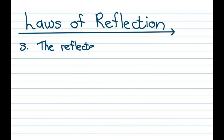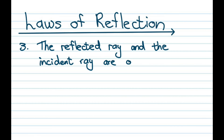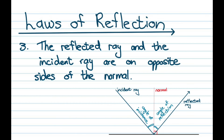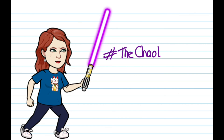Our third law states that the reflected ray and the incident ray are on opposite sides of the normal. Looking at the picture, the incident ray is on the left of the normal and the reflected ray is on the right of the normal. I hope this helps — thank you for visiting the chaotic classroom.